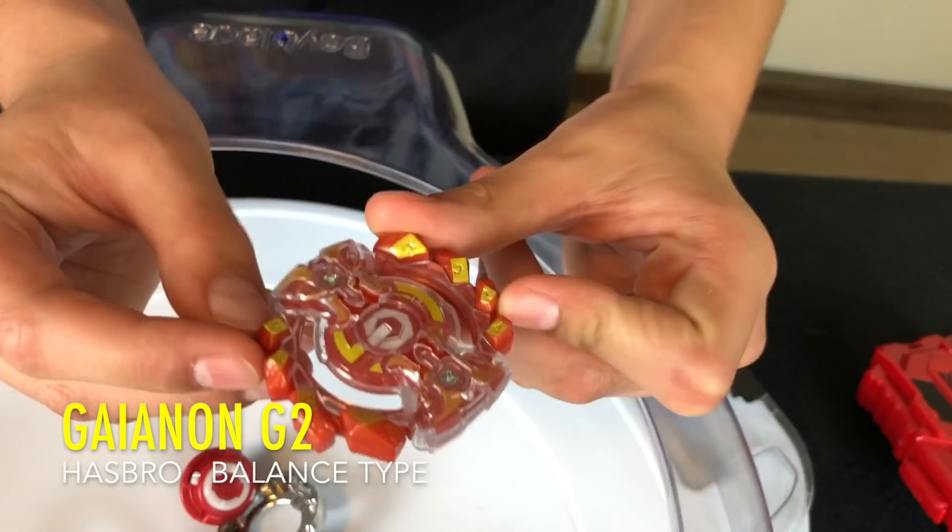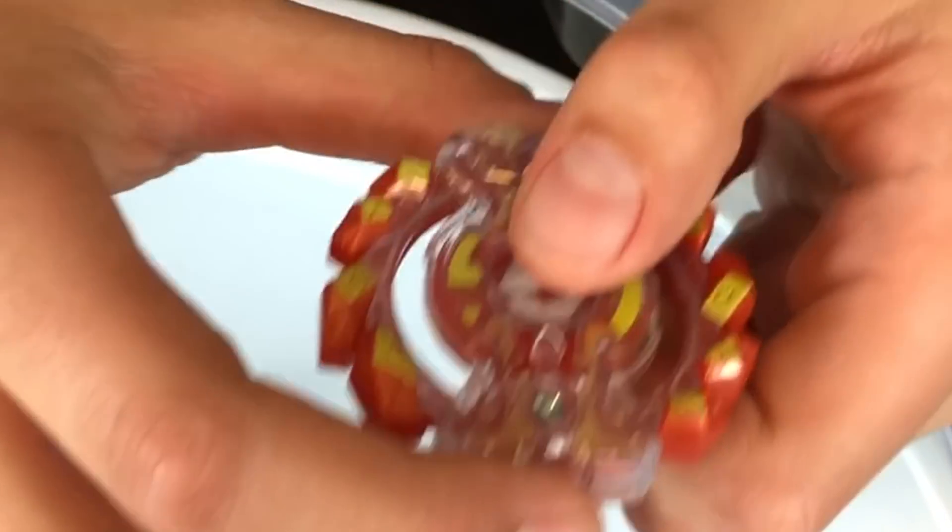Here is Gynon G2. It's so awesome, like a rock-shaped. This looks like an armored head. The back is all orange, really cool. Let's put Gynon G2 together.